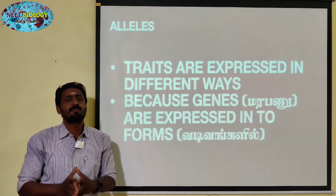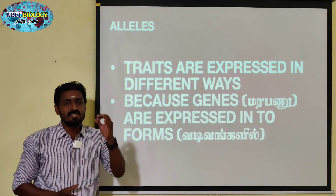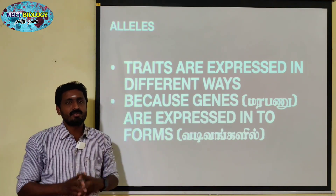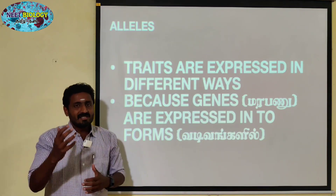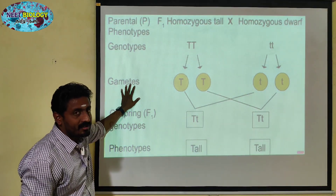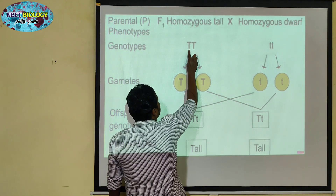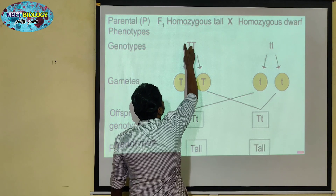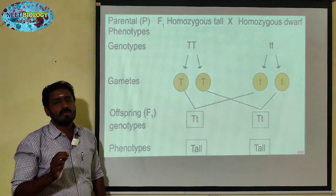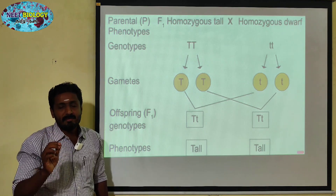In the hybridization experiment, alleles are forms of a gene. In the monohybrid cross experiment, this gene is responsible for the character of tallness — the tallness of a pea plant.